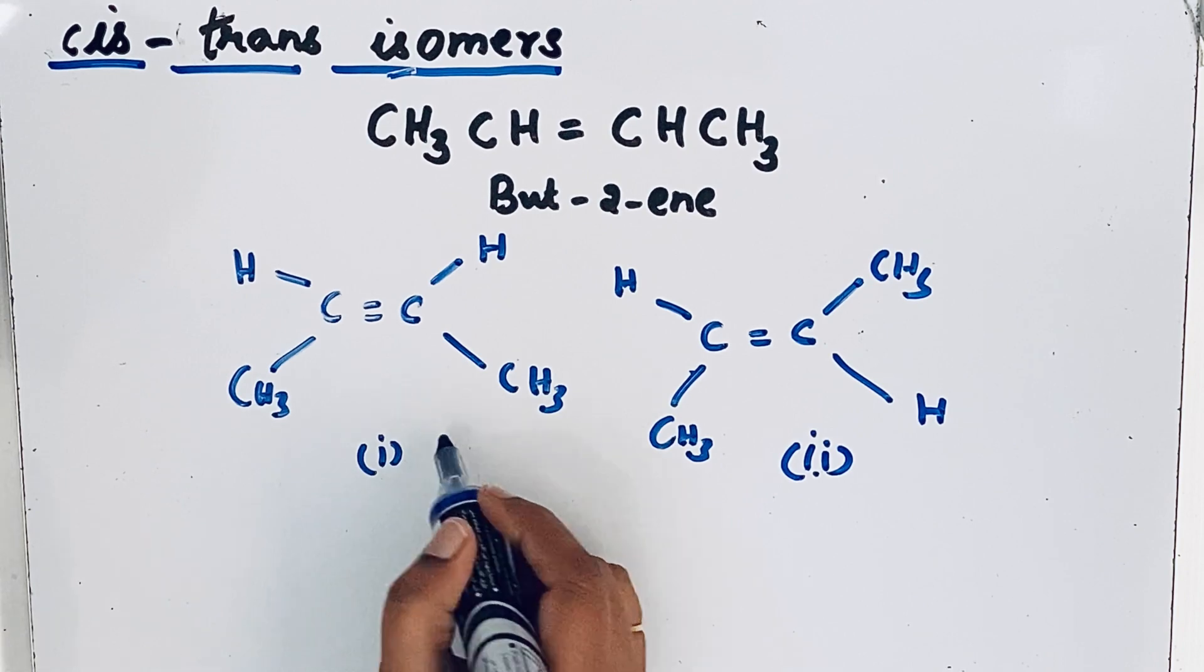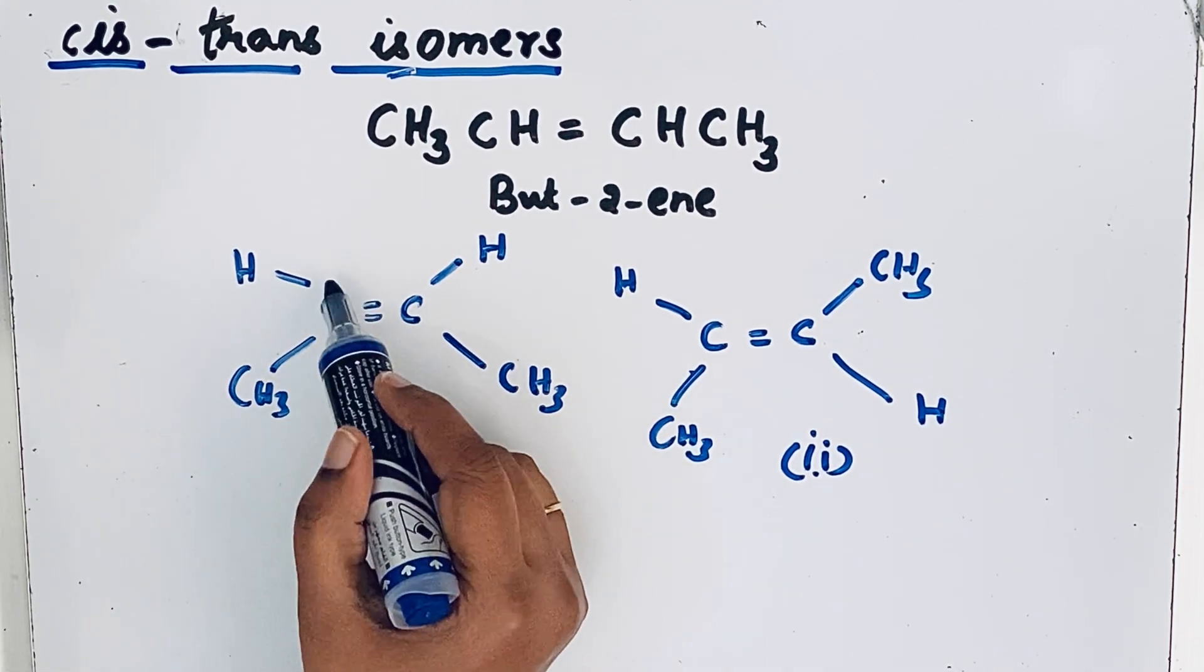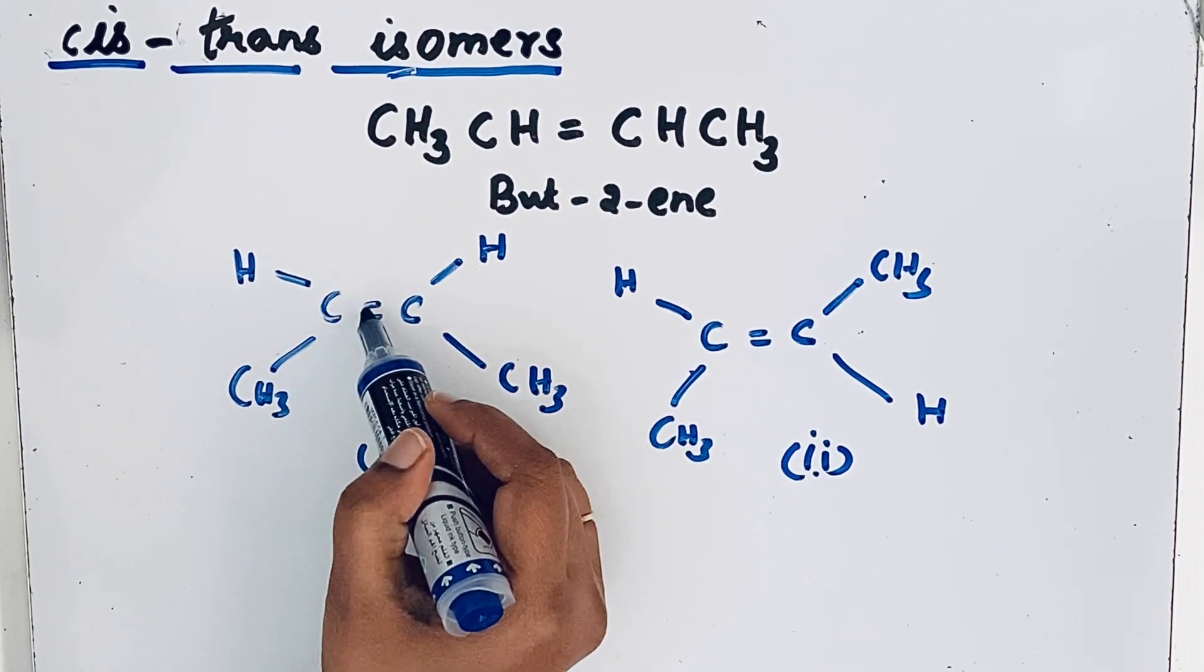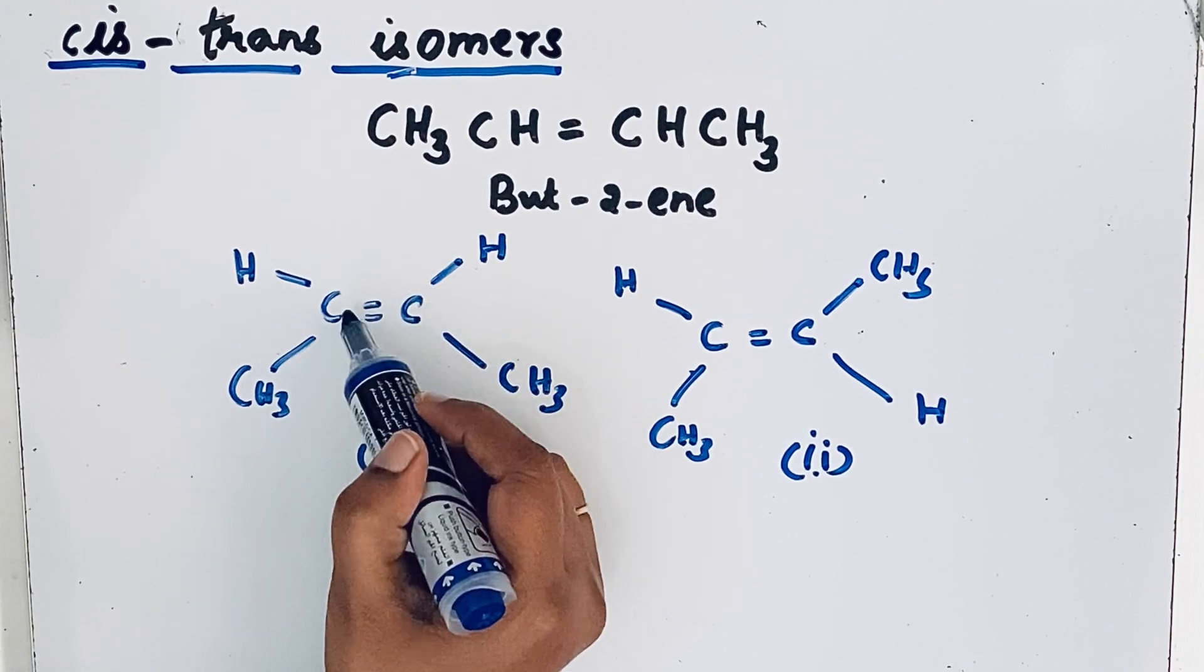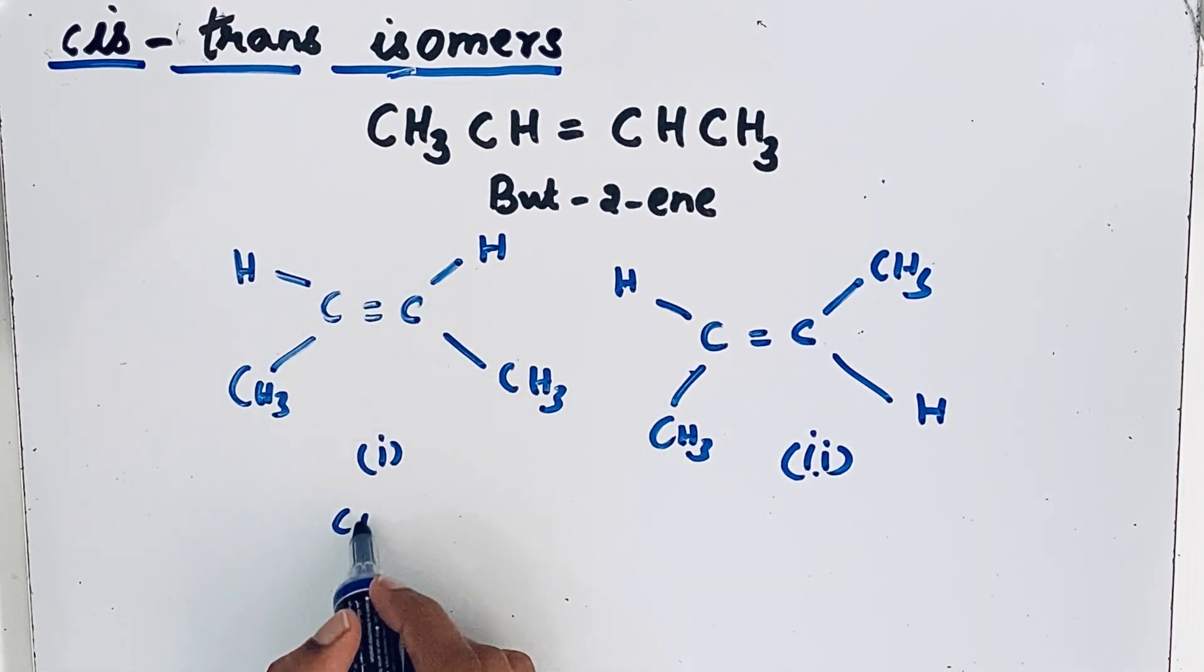If we compare this structure one and structure two, in structure one you can see identical atoms, that means hydrogen atoms. Then here methyl group lies on the same side of the double bond. So this we called cis isomer.